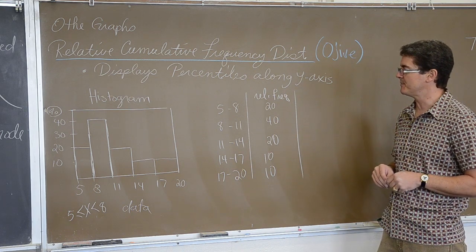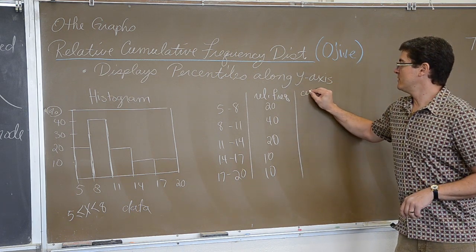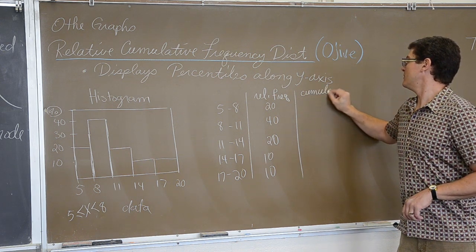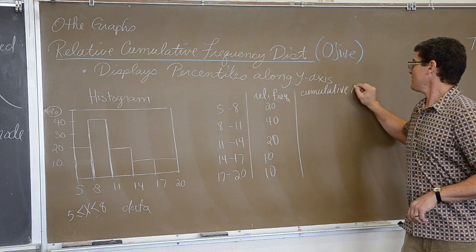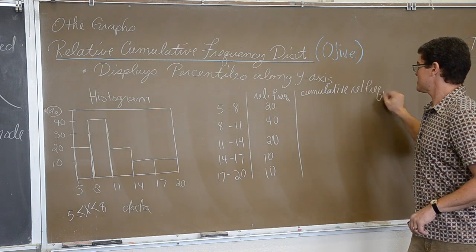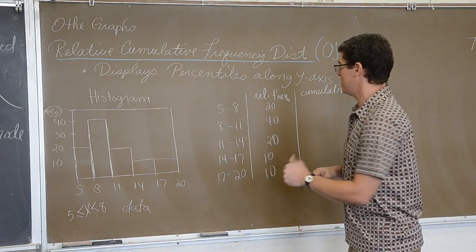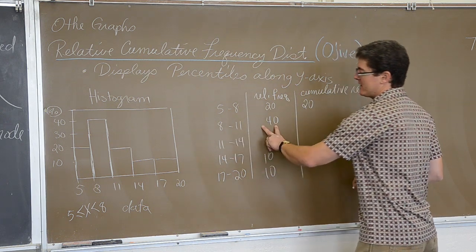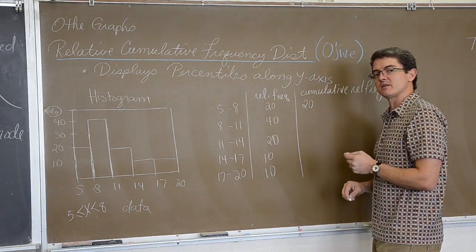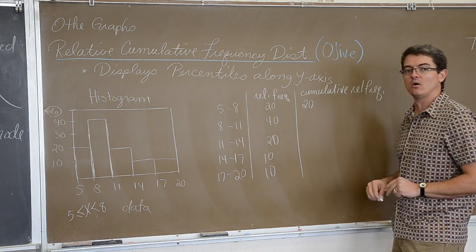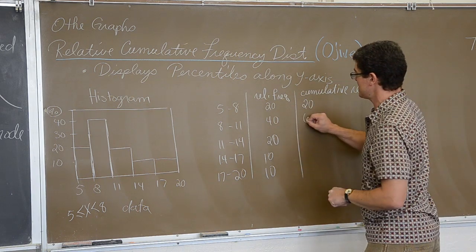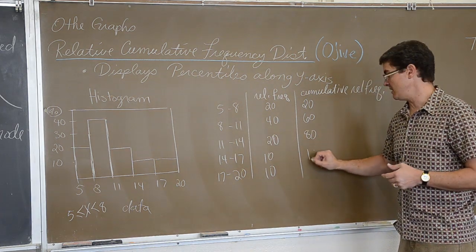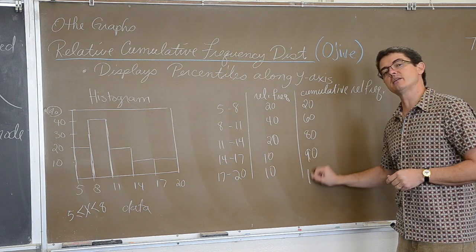A cumulative relative frequency just simply means add up the percents as you go down. So, 20% of the data is between 5 and 8, but when we get to the 8 and 11, 8 to 11 is 40% of the data. Well, if you are adding up the numbers as you go, then that is 20 and 40 is 60%. Another 20 gives you a total of 80 as you add as you go down. Another 10 is 90. And then finally another 10 is 100%.